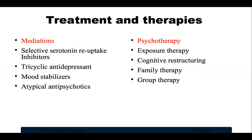Cognitive restructuring helps people make sense of bad memories. Sometimes people remember the event differently from how it happened and may feel guilt or shame about something that was not their fault. Therapy helps people with PTSD look at what happened in a more realistic way. Family therapy is also effective because the behavior of a person with PTSD can also affect other family members. Group therapy allows the person to share thoughts, fears, and feelings with others who have experienced traumatic events.